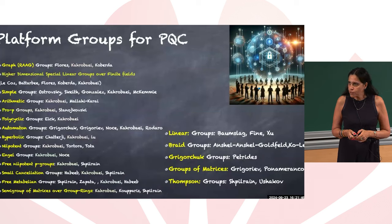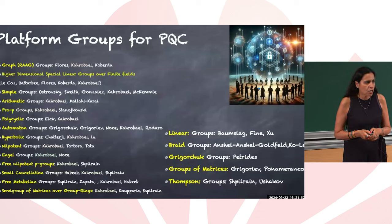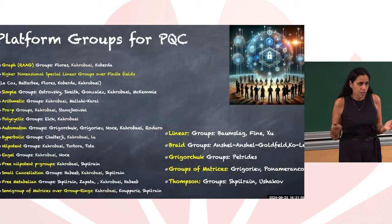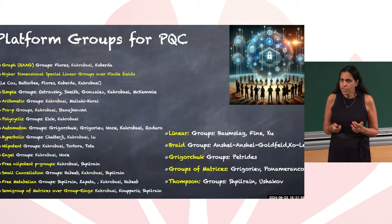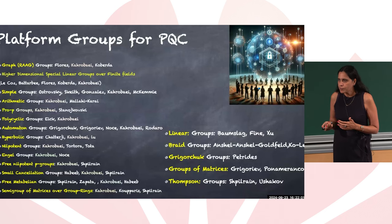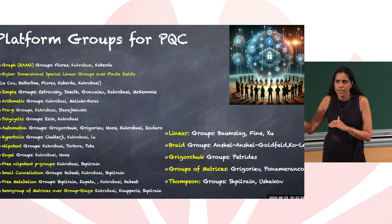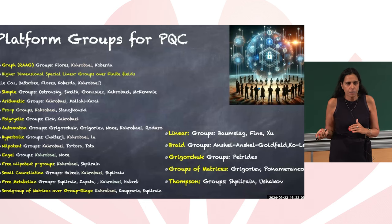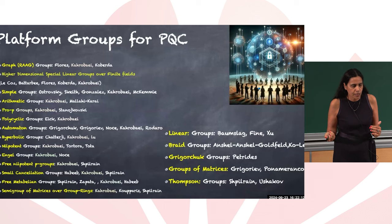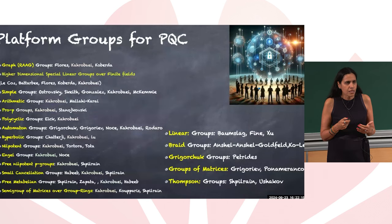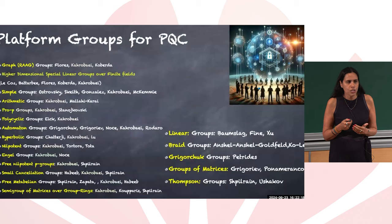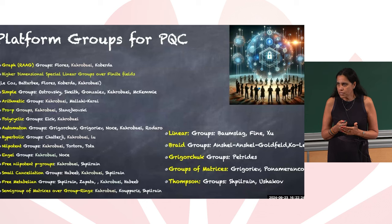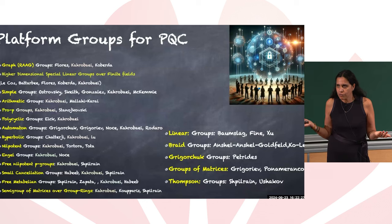There has been other platforms proposed. For example, braid group has been proposed at the beginning in 1999, based on the fact and belief that the conjugacy search problem in such groups is very hard. I must note that some of these problems have been shown to be NP-hard. But sometimes we just based our belief based on the fact that these problems experimentally is hard or no one could find a fast algorithm for them yet.